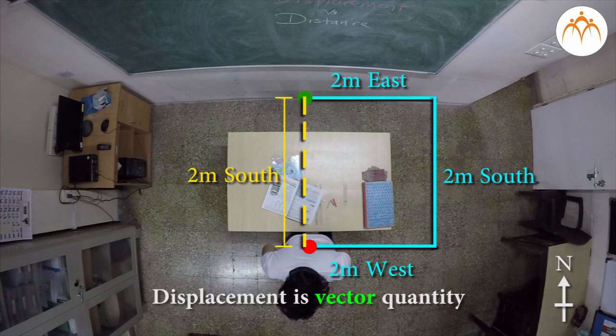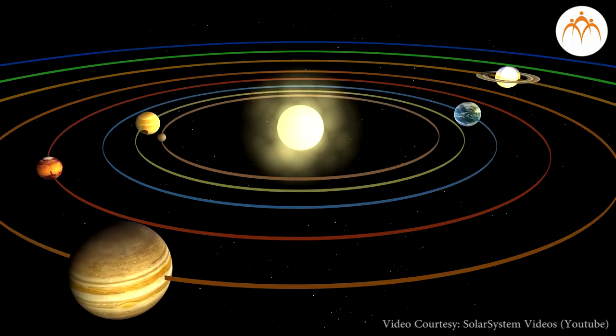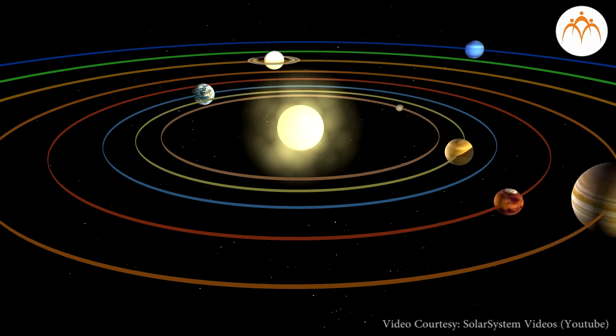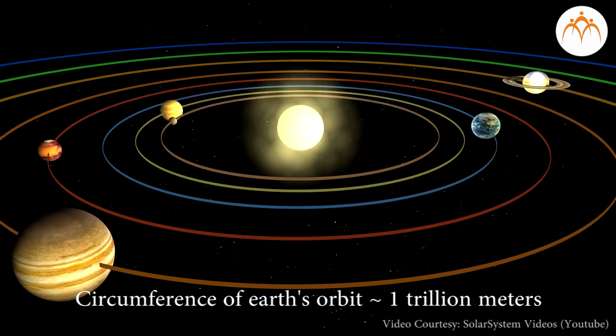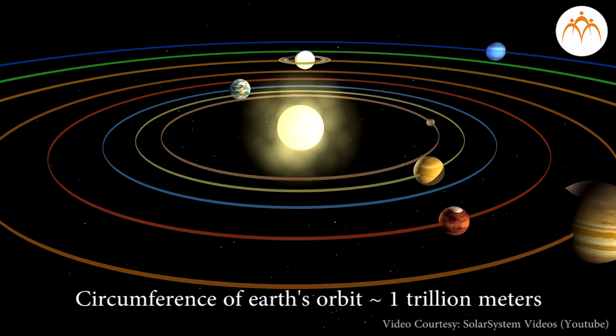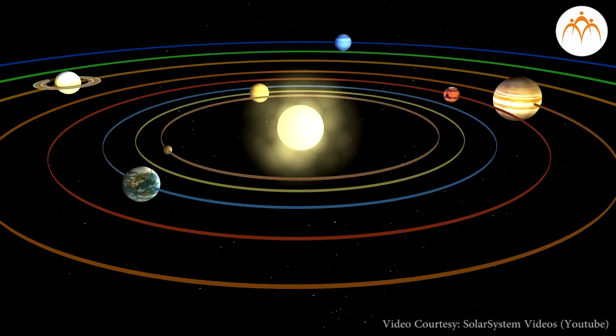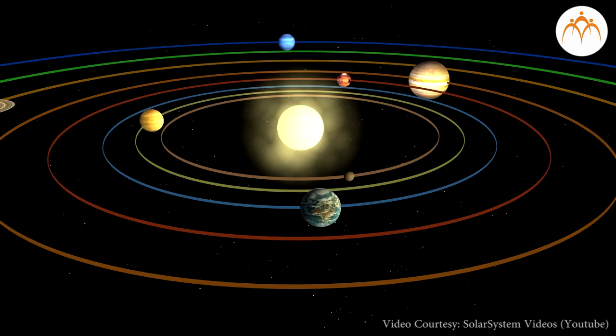How far does the Earth travel in one year? In terms of distance, quite far. The circumference of Earth's orbit is nearly one trillion meters. But in terms of displacement, not far at all—zero actually. At the end of a year's time, the Earth is right back where it started from.